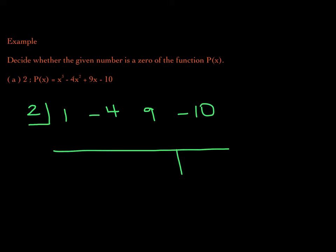We also know by the factor theorem that 2 is a zero of this function if and only if the remainder is 0. So, if I get a 0 here for the remainder, then I'm going to say yes, 2 is a zero of p. If the remainder is not 0, then I will say no, 2 is not a zero of p.